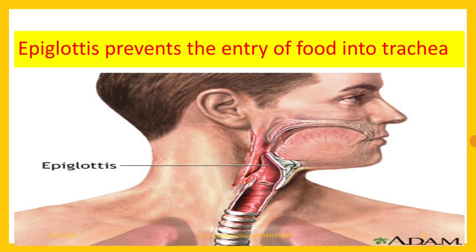The larynx is the voice box — the sound-producing apparatus in mammals. There is a lid-like structure called the epiglottis, which prevents the entry of food into the trachea during swallowing. Whenever a mammal swallows food, breathing is arrested because the epiglottis closes the glottis. Thus, the epiglottis prevents the entry of food into the trachea by closing the glottis.